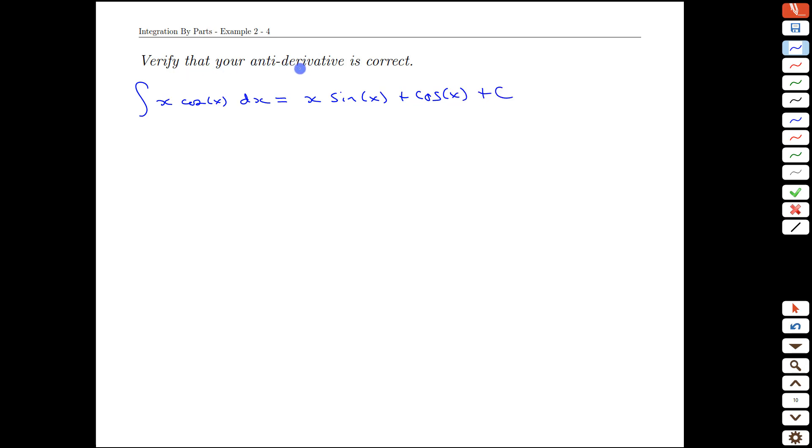Again, given that this process is new, we should verify that our antiderivative is correct. We do that by writing out our integral. And then our check is that the derivative of that right hand side gets us back to the x cos x. So we take the derivative of x sine of x plus cos of x plus c.